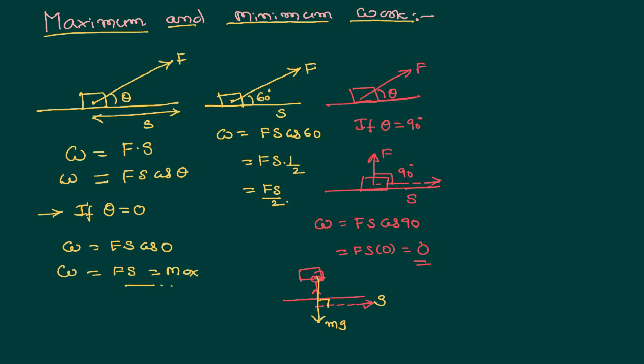Therefore, work done by this railway porter carrying the load on his head, according to physics, is equal to 0, assuming that the surface is smooth.